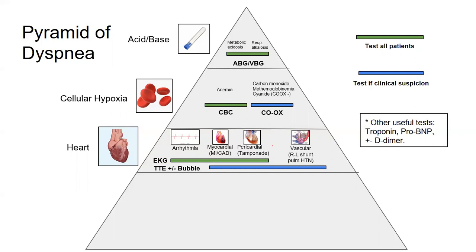The way to diagnose pulmonary hypertension from an echo is to measure the tricuspid jet — every patient will have a tiny tricuspid regurgitation jet. You measure the velocity of that jet and use the equation to calculate the RV pressure.